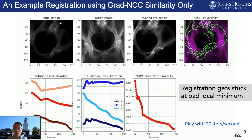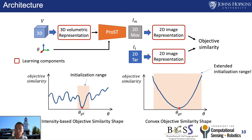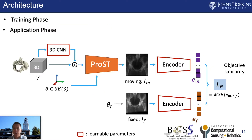In order to solve this problem, we take advantage of the end-to-end differentiable property of our PROST. We propose to reshape the similarity function to be convex by learning the 2D and 3D image representations. The goal is to learn an objective similarity — denoted L_n — to be a convex function.